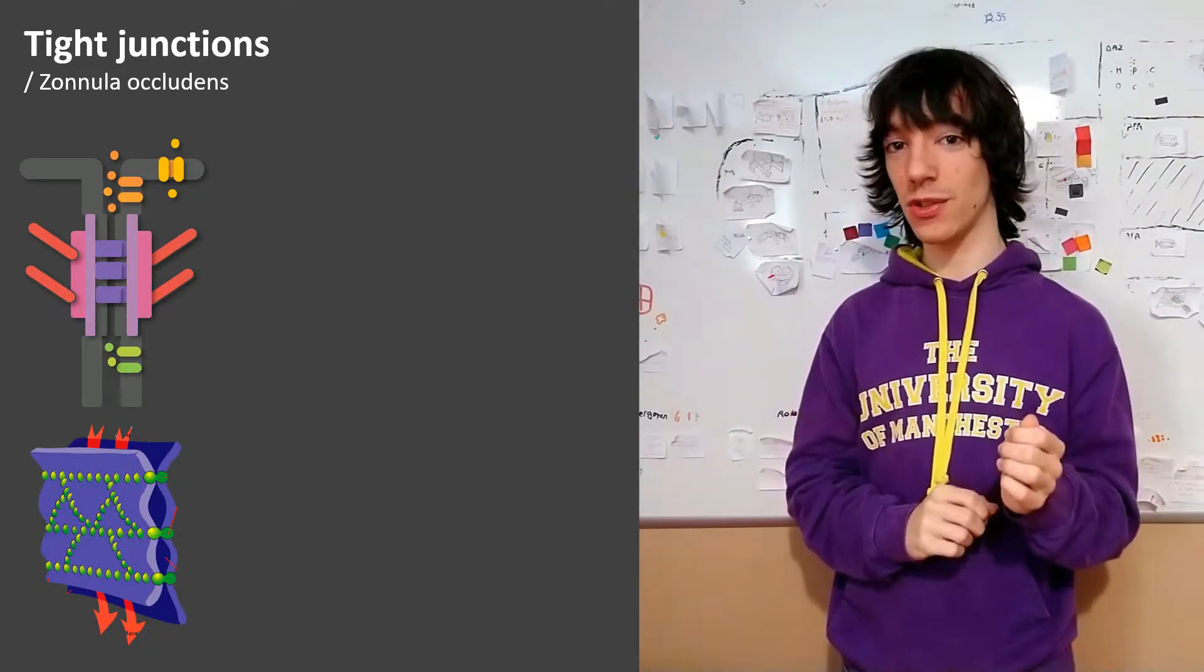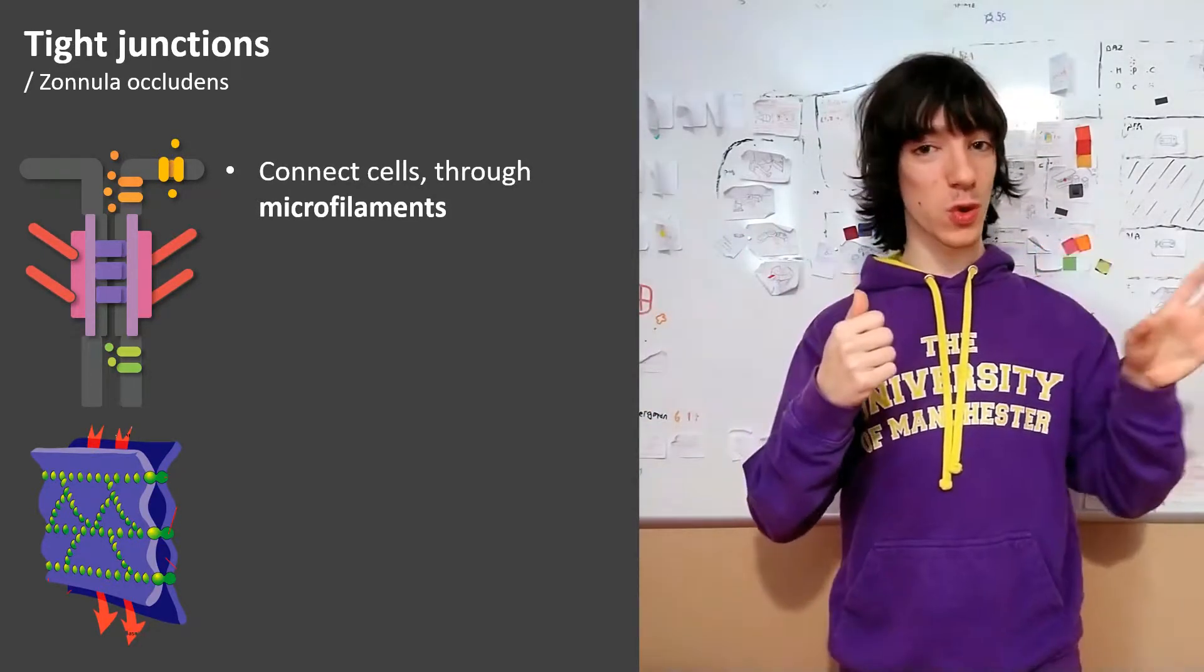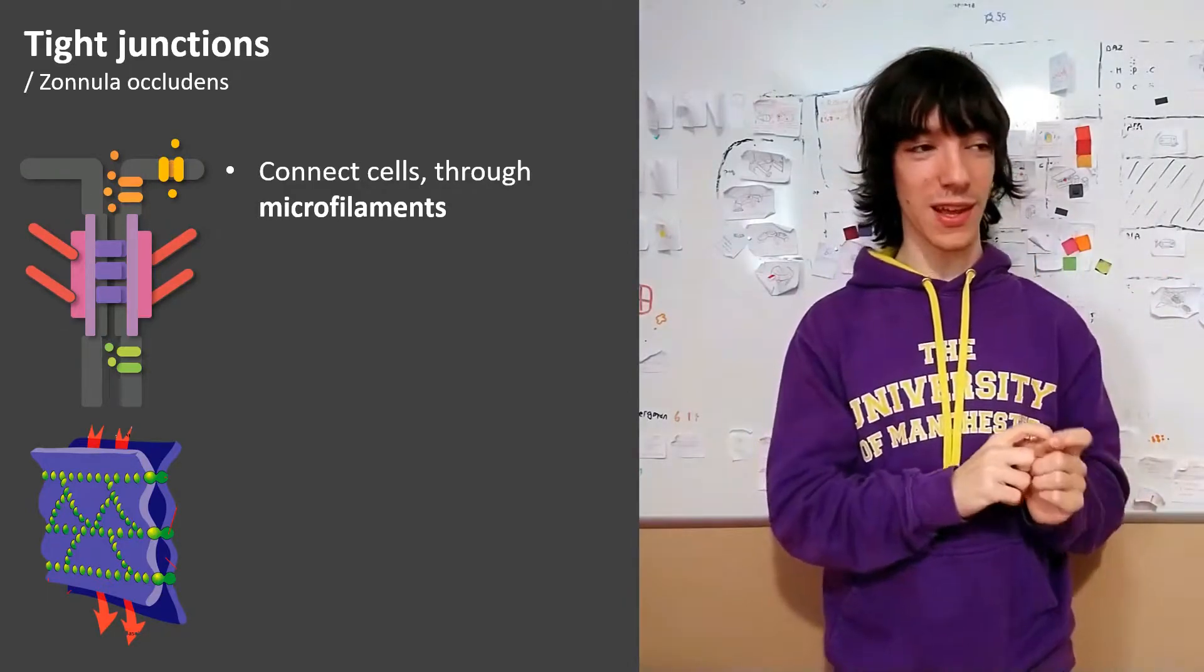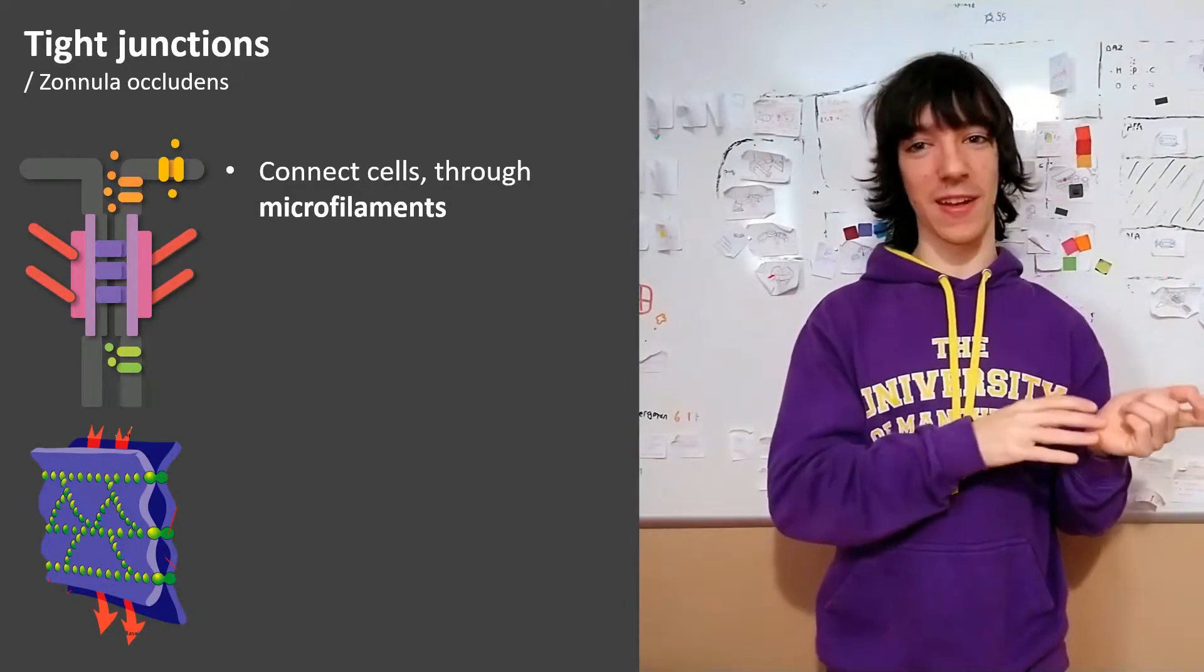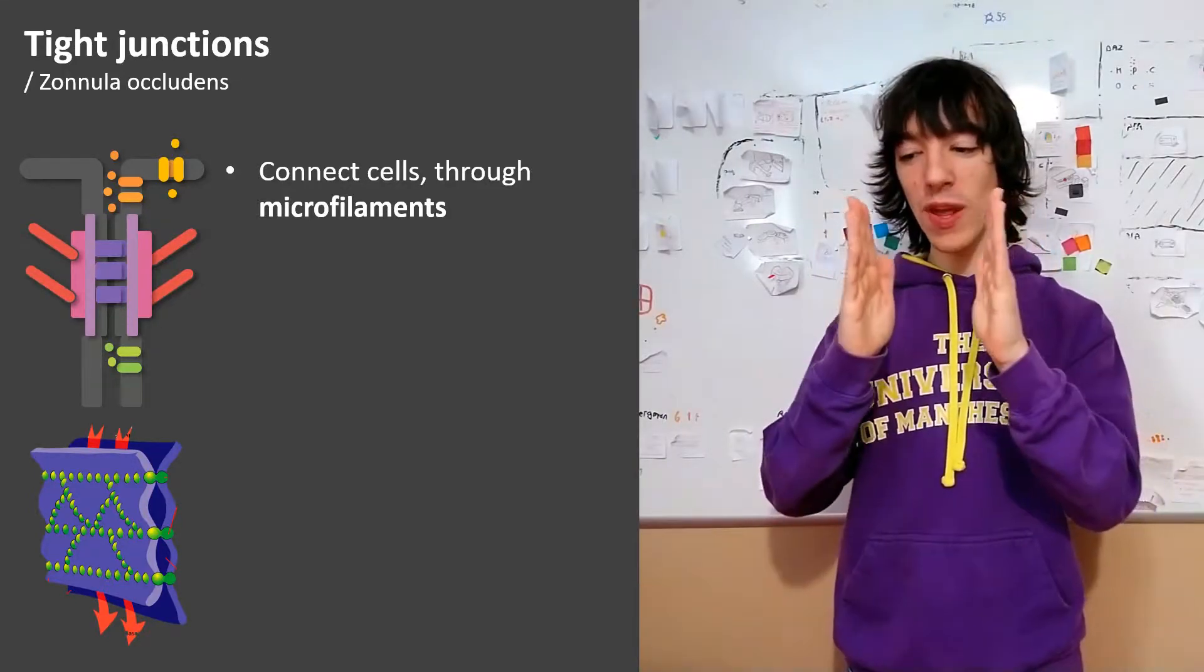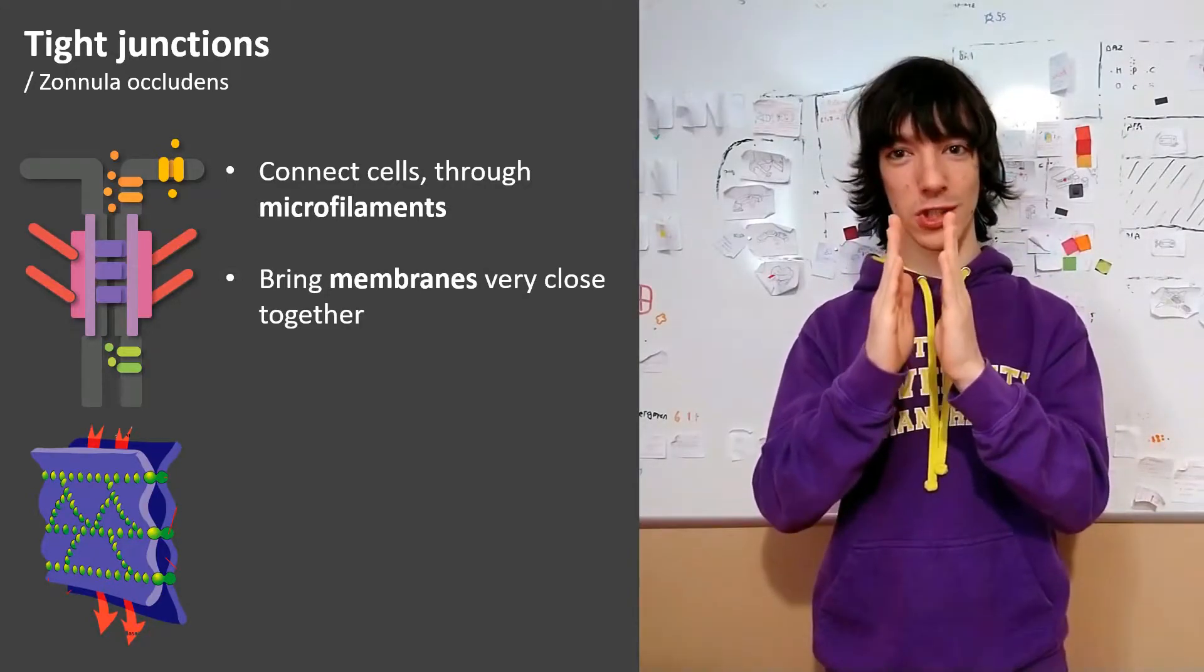In the case of tight junctions, they connect the microfilaments of one cell to those of the neighboring cells. What makes tight junctions really special is that they bring the membranes of the cells that they are connecting very close together.